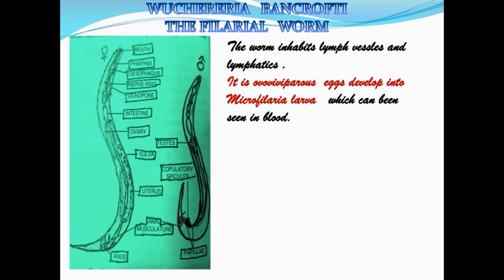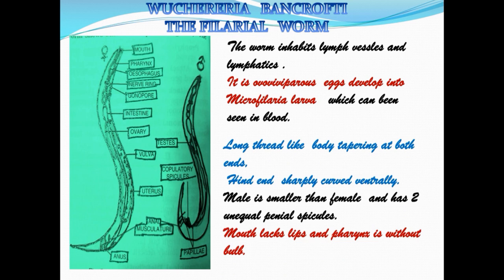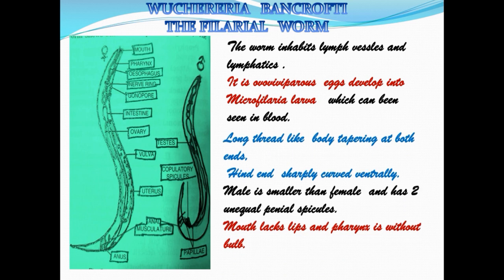Wuchereria bancrofti, the filarial worm, is ovoviviparous — eggs develop into micro filarial larva which can be seen in the blood. It has a long thread-like body tapering at both ends, hind end sharply curved ventrally. Male is smaller than the female and has two unequal penial spicules. Mouth lacks lips and pharynx is without bulb, characteristics resembling those of hookworm.